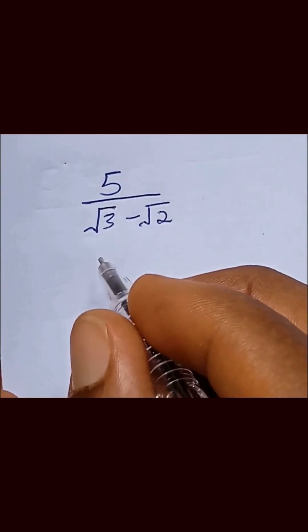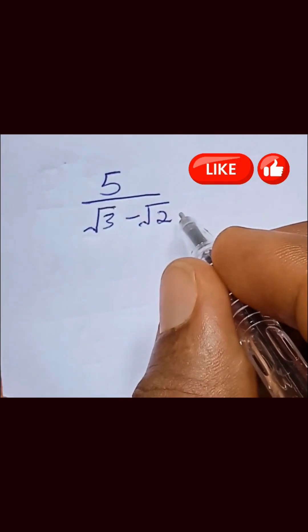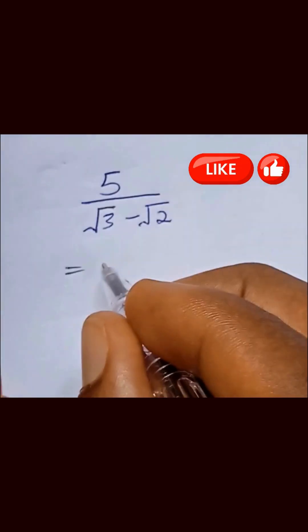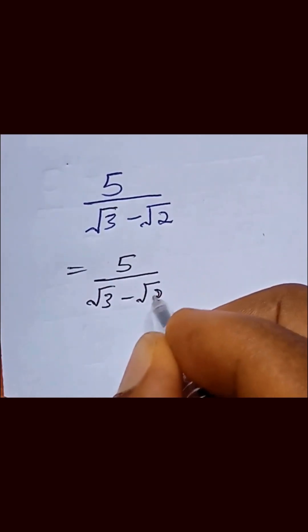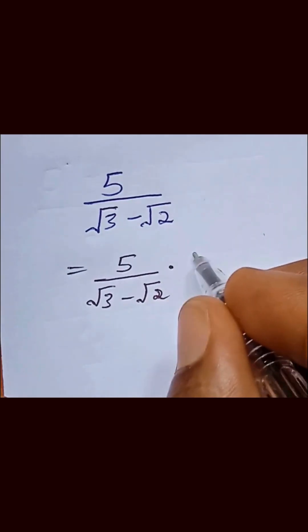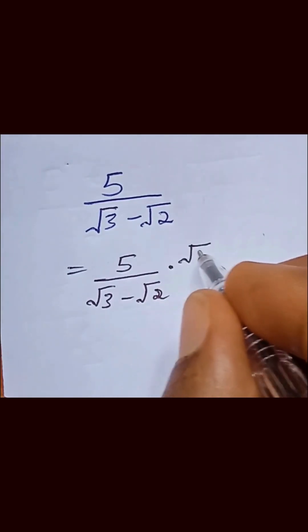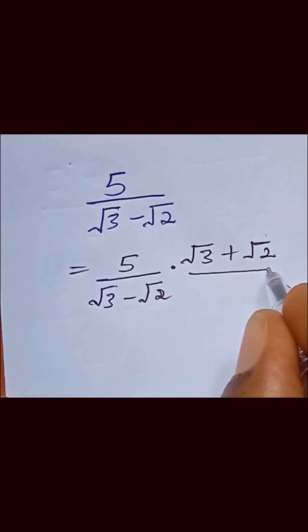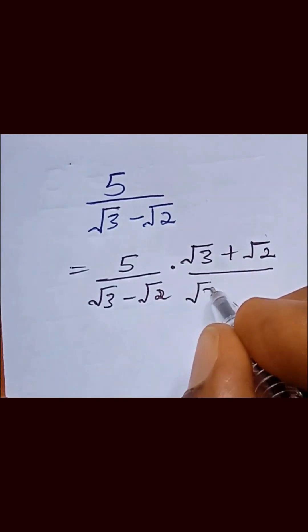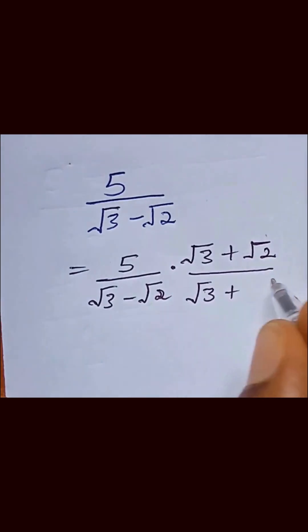So let's do this real quick. We want to rationalize this. So here we have this to be equal to 5 over square root of 3 minus square root of 2. So this will be multiplied by the conjugate: square root of 3 plus square root of 2 over square root of 3 plus square root of 2. So we multiply this with this and this with this.